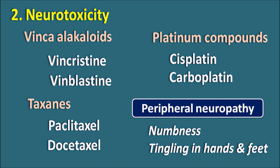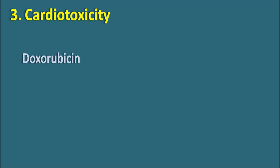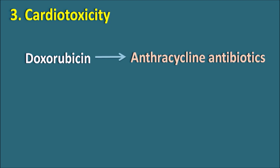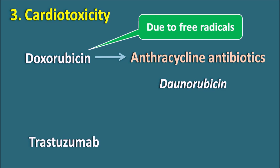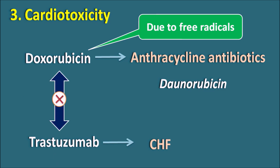To summarize: two groups of plant derivatives — vinca alkaloids and taxanes — along with platinum compounds produce peripheral neuropathy. Third is cardiotoxicity. Doxorubicin, an anthracycline antibiotic, acts by generating free radicals that cause damage to the cardiac membrane, leading to cardiotoxicity. Another related anthracycline antibiotic, daunorubicin, can also produce cardiotoxicity, but with less risk compared to doxorubicin. Trastuzumab, a monoclonal antibody targeting epidermal growth factor receptors, can also produce congestive heart failure. Doxorubicin and trastuzumab should not be combined as both produce cardiotoxicity.